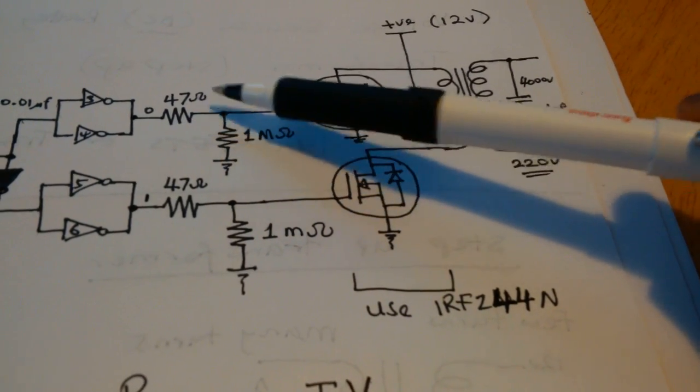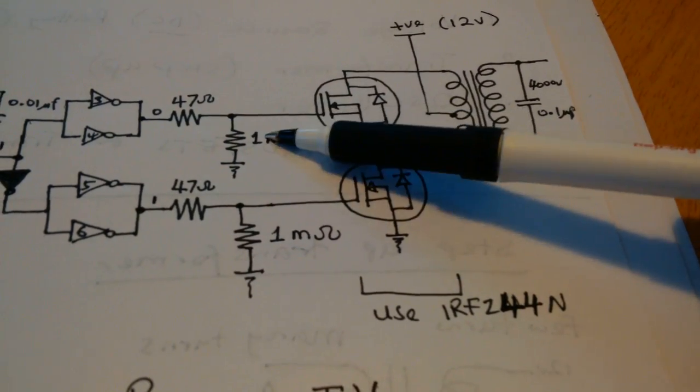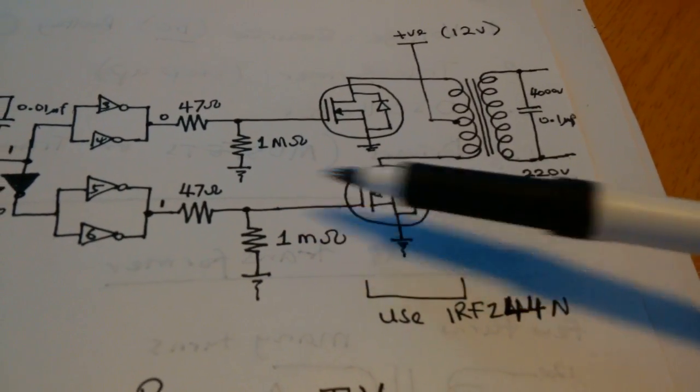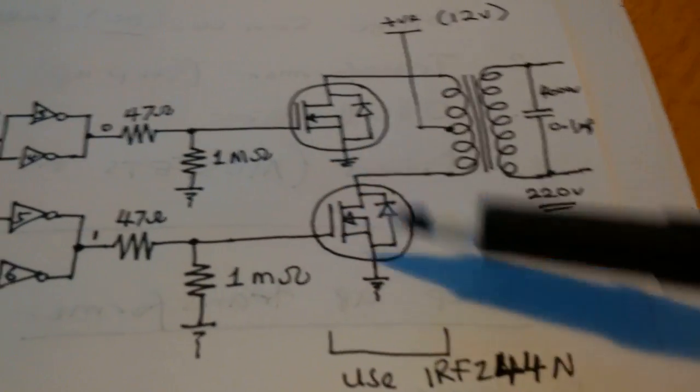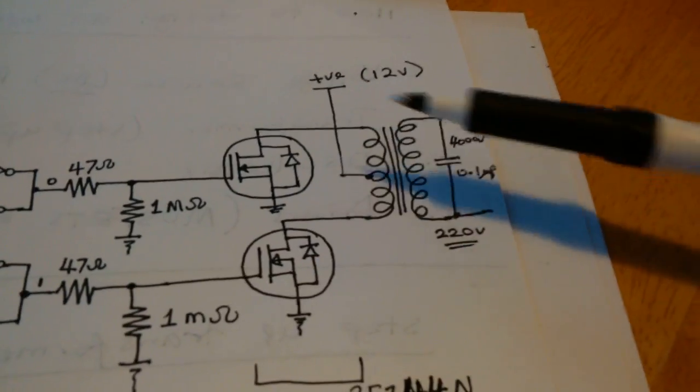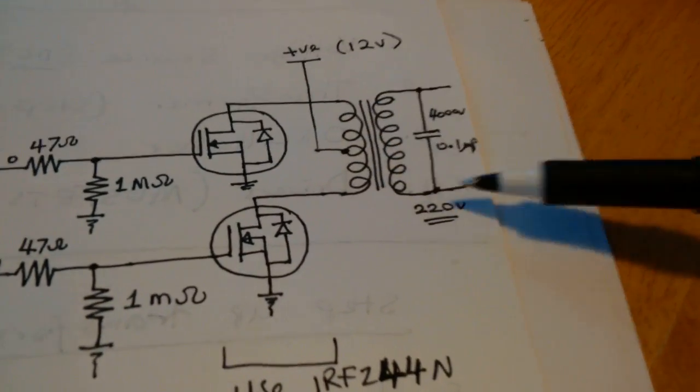So, when this signal, when this phase is zero, this pulls the gate down. Make sure it's actually grounded while this is one. You want the MOSFETs to be on one at a time, and that's your transformer right there.